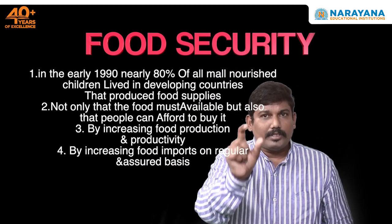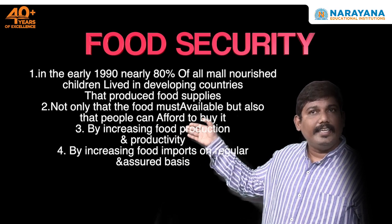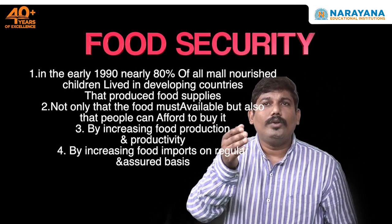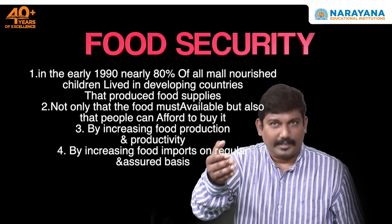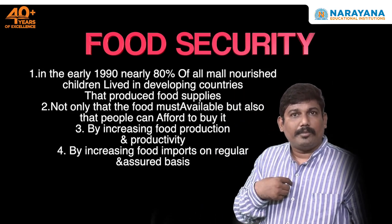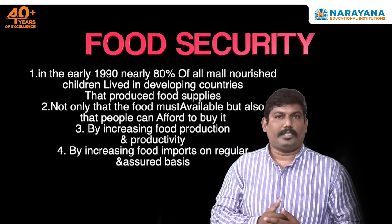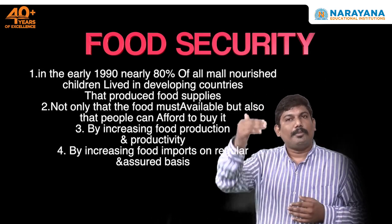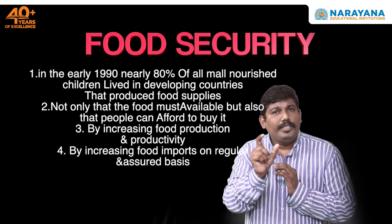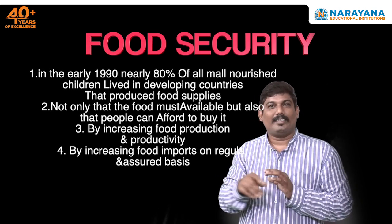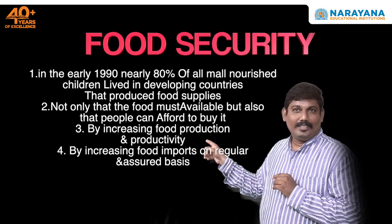We will write the answer point-wise. First point: in the early 1990s, nearly 80% of all malnourished children lived here, and to overcome that, food production was raised. Second point: not only the availability of food production matters, but people also need to be able to afford to buy it. The government must support poor people by providing food at a lower price.